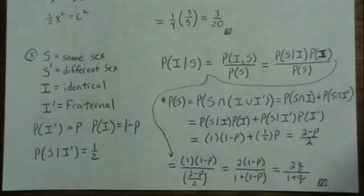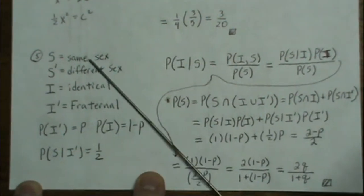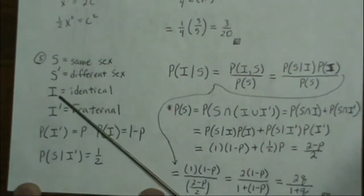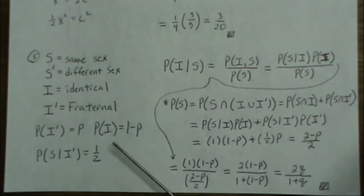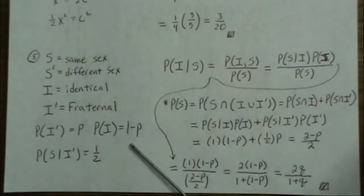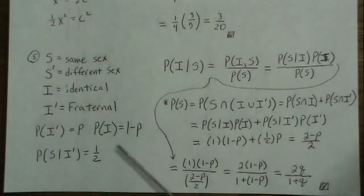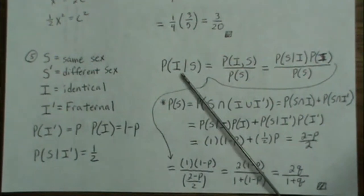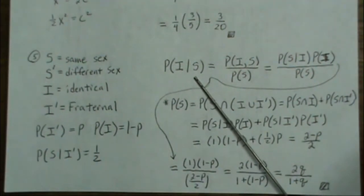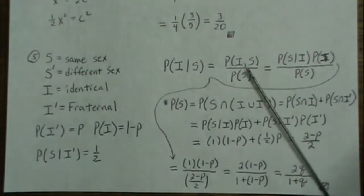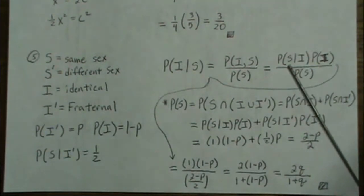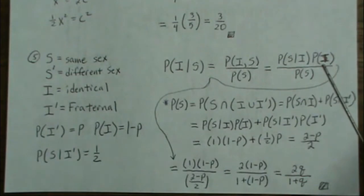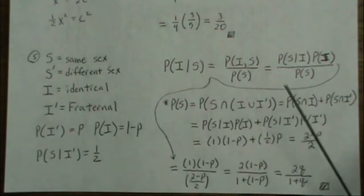We set up notation: let S equal that the twins are the same sex, I means identical twins, and I prime means fraternal. The probability of fraternal twins is P and identical is one minus P. The probability of same sex given fraternal twins is 50%. We want to find P(I | S), which can be rewritten as P(I ∩ S) over P(S), then as P(S | I) times P(I) all over P(S).